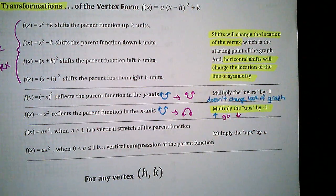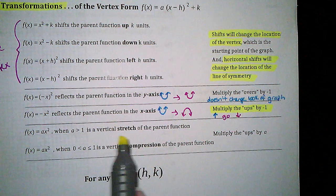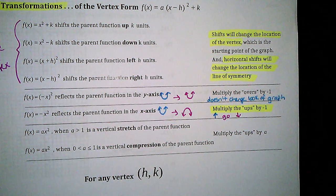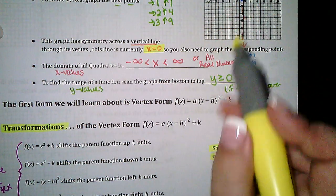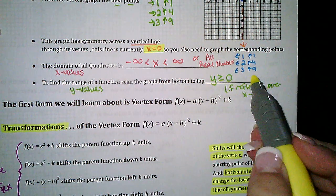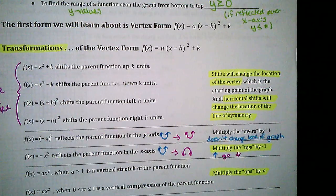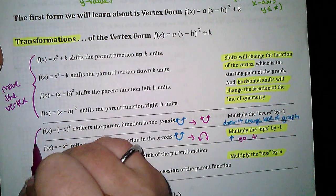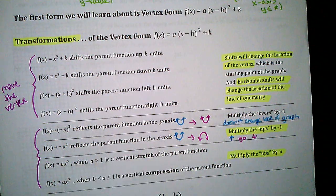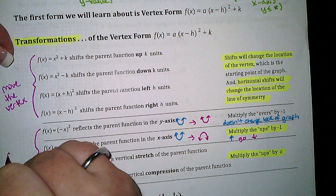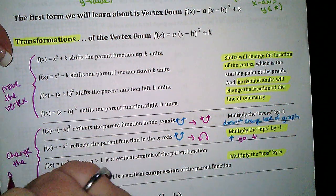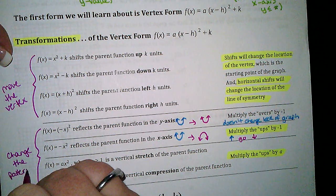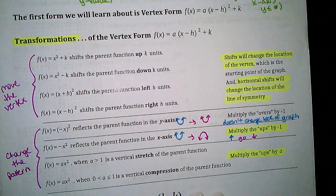Last but not least, we have stretches and compressions. A stretch is when the factor is bigger than one; a compression is between zero and one. On these, you multiply the ups. The value 1, 4, 9 pattern may not always hold — if I have a vertical stretch or compression, that will change it. Notice these four transformations — reflection over y-axis, reflection over x-axis, stretch, compression — did not change the vertex. They changed the over-and-up pattern: over 1 up 1, over 2 up 4, over 3 up 9.